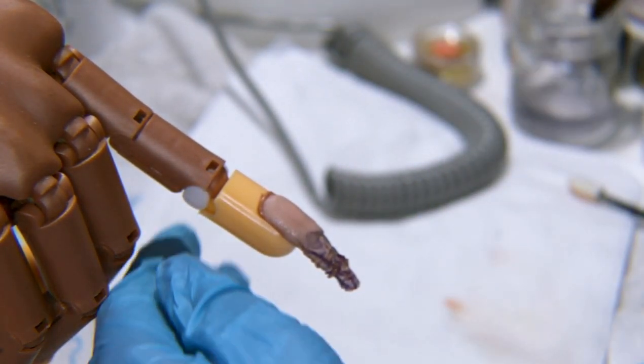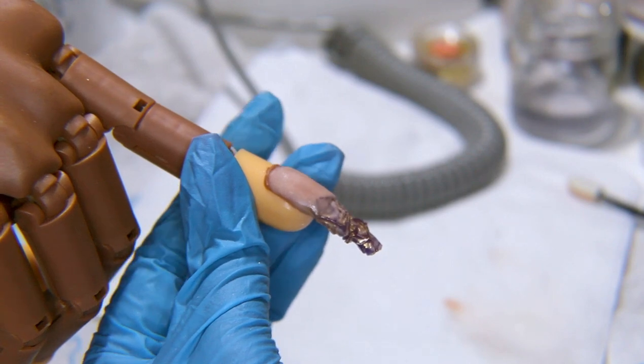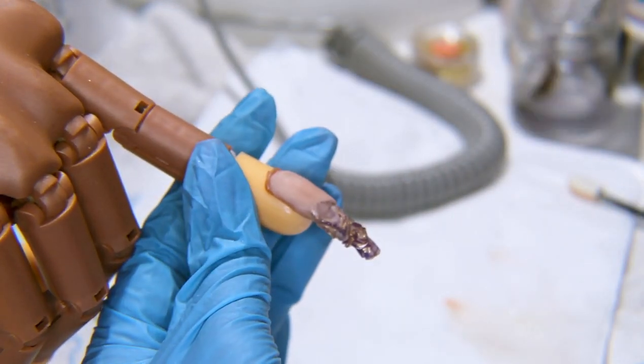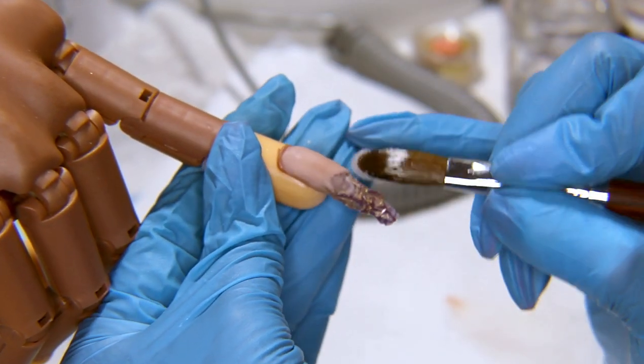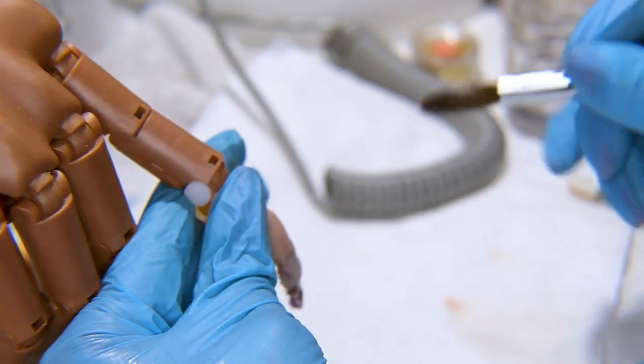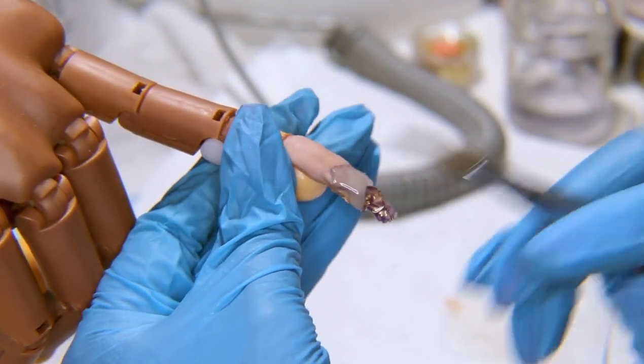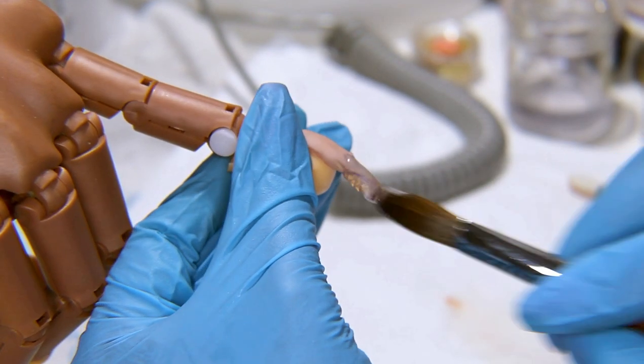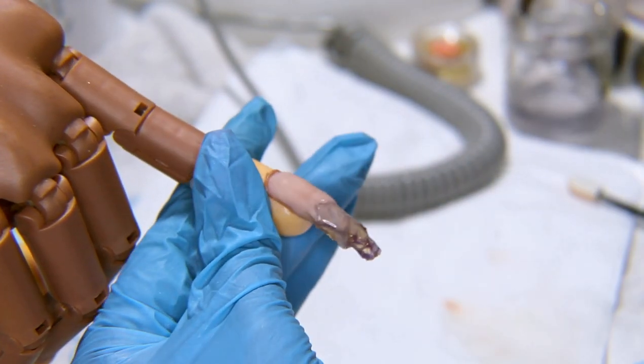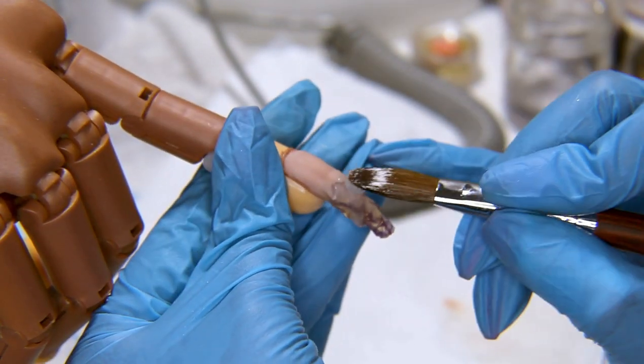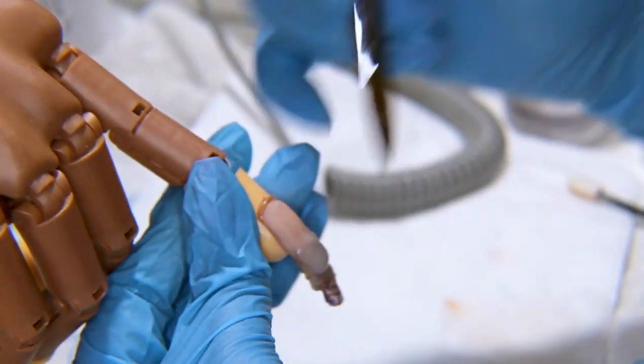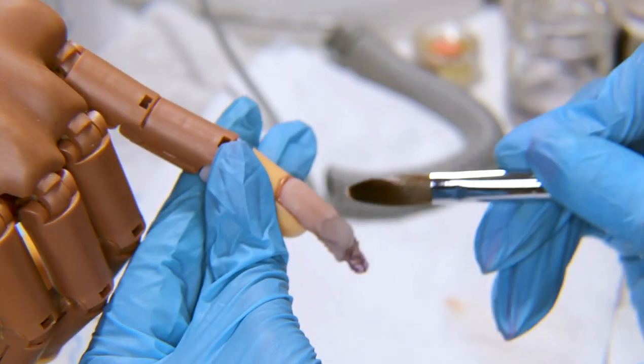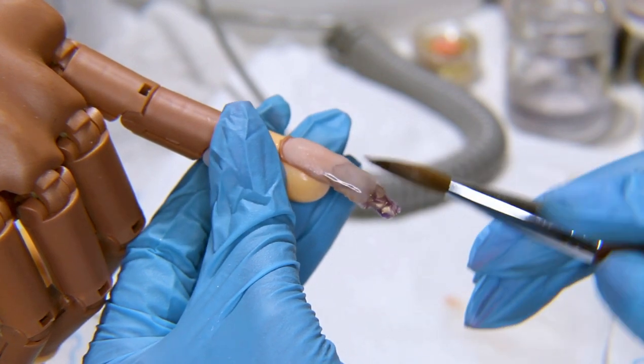I'm gonna go in with my clear acrylic now. I'm gonna take another bead and push it into the crevices first, allowing the beads to run into all the little nooks. I don't want to brush it too much because I don't want to lose the chrome powder. I'm just going to encapsulate that.